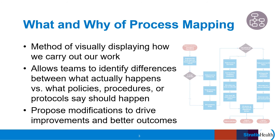Process mapping is a method to visually display how work is done. One of the primary benefits of process mapping is discovering the gaps between what we believe is happening based on policies, procedures, and protocols versus what is actually happening — that is, how team members are carrying out the work. The power of process mapping lies in building a common understanding through a visual representation.